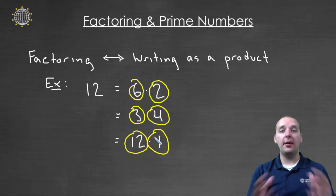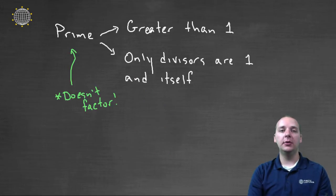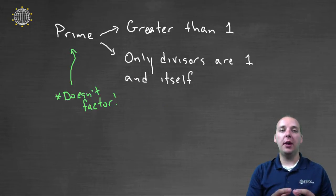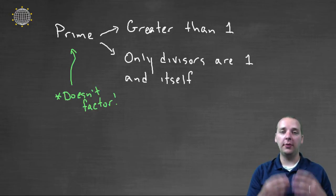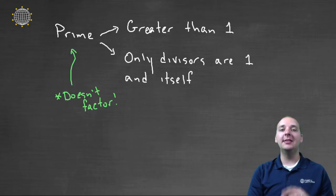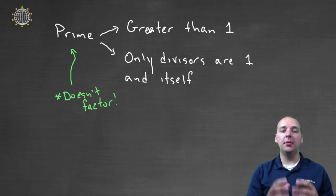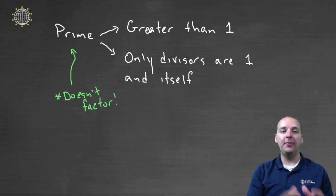Some numbers do not factor like twelve does in a lot of different ways. We have a name for those numbers — these are called prime numbers. Now to be a prime number, you do have to be a whole number, a natural number that's greater than one to even be considered as a prime number. But in addition to being greater than one, the only divisors that your number can have are simply one and itself.